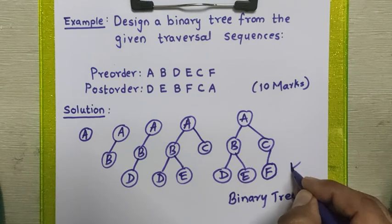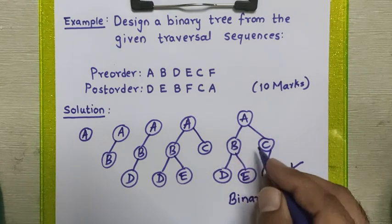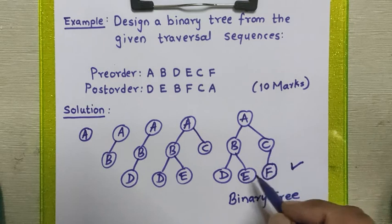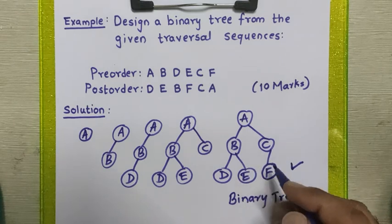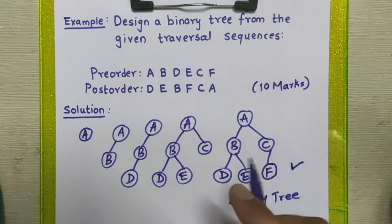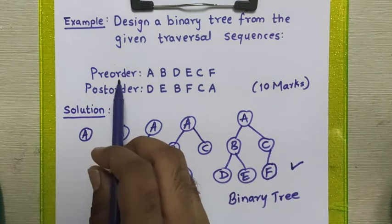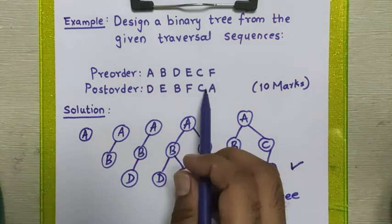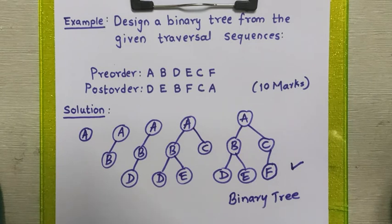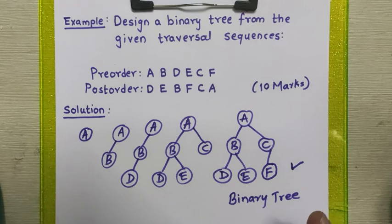Traversing this tree in pre-order and post-order fashion gives us the same sequences as provided. So this is the final binary tree. This is how we can design a binary tree from given pre-order and post-order traversal sequences. Thank you for watching the video.